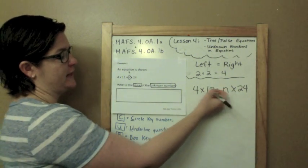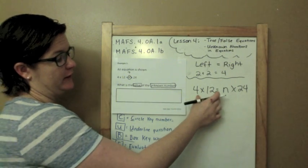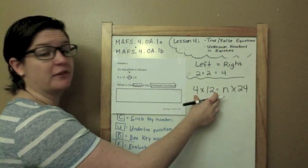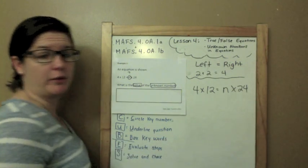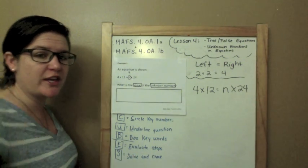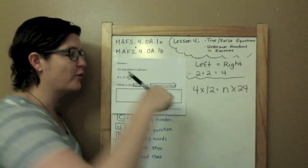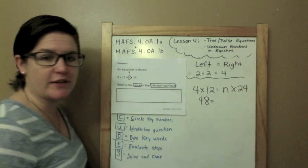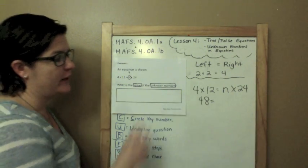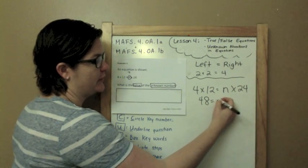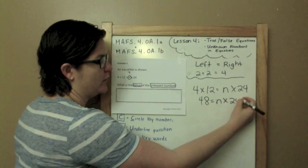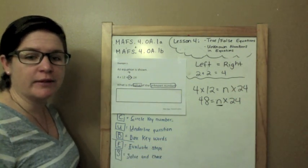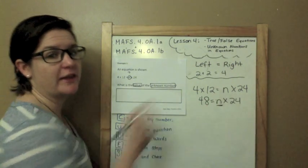If I know that this side must be equal to this side, I need to figure out what the left side equals to help me figure out the value of that unknown number. So we need to plug something in for n that when we plug this number in and we multiply that number by 24 we get the same value as 48 because our equation needs to be equal.